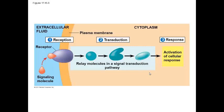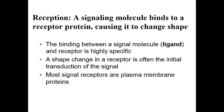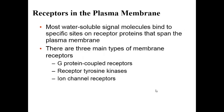Different pathways within the cell trigger different responses in the target cell. We're going to look more closely at each step in a signal transduction pathway. The first step is reception — when the ligand, or chemical messenger, binds to a receptor on the cell membrane. We're going to study three different types of receptors: G-protein coupled receptors, receptor tyrosine kinases, and ion channel receptors.